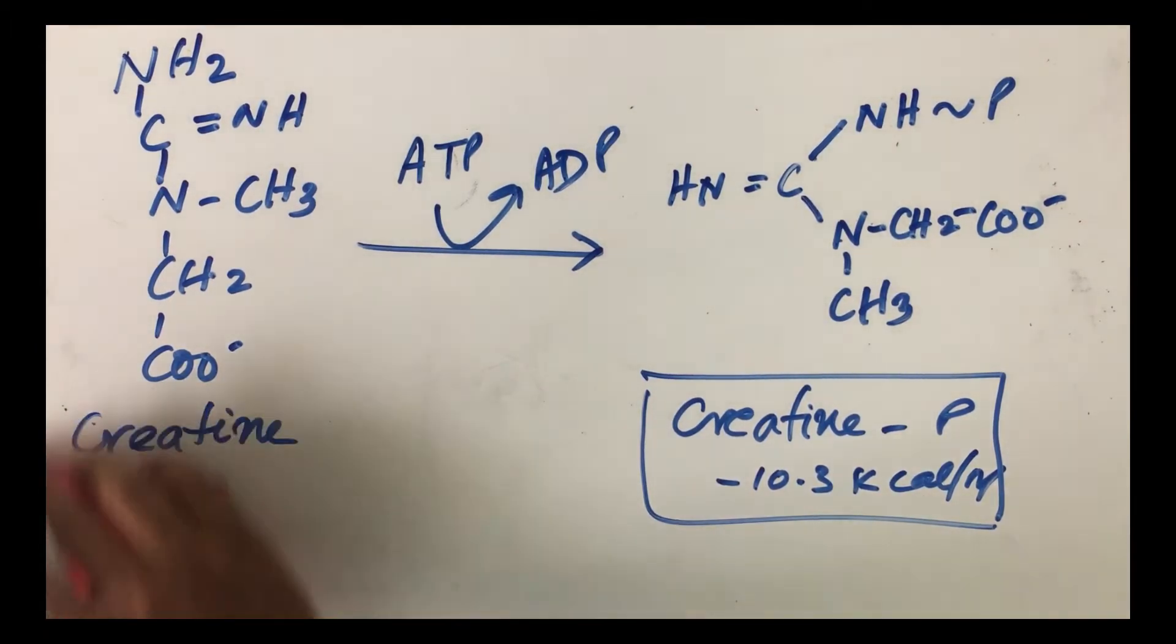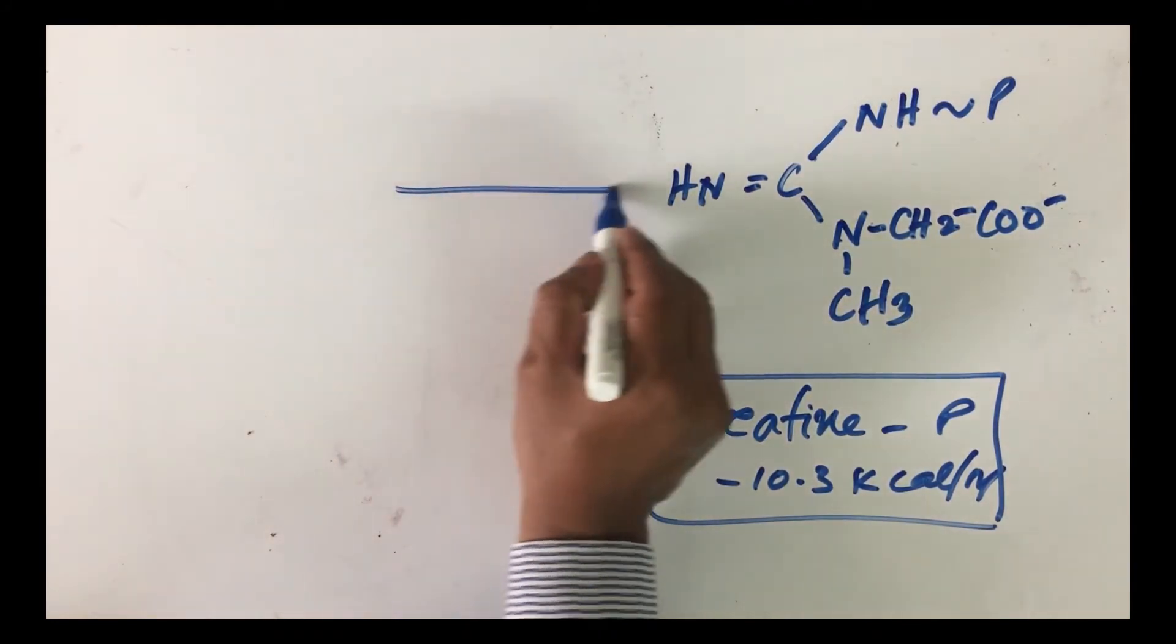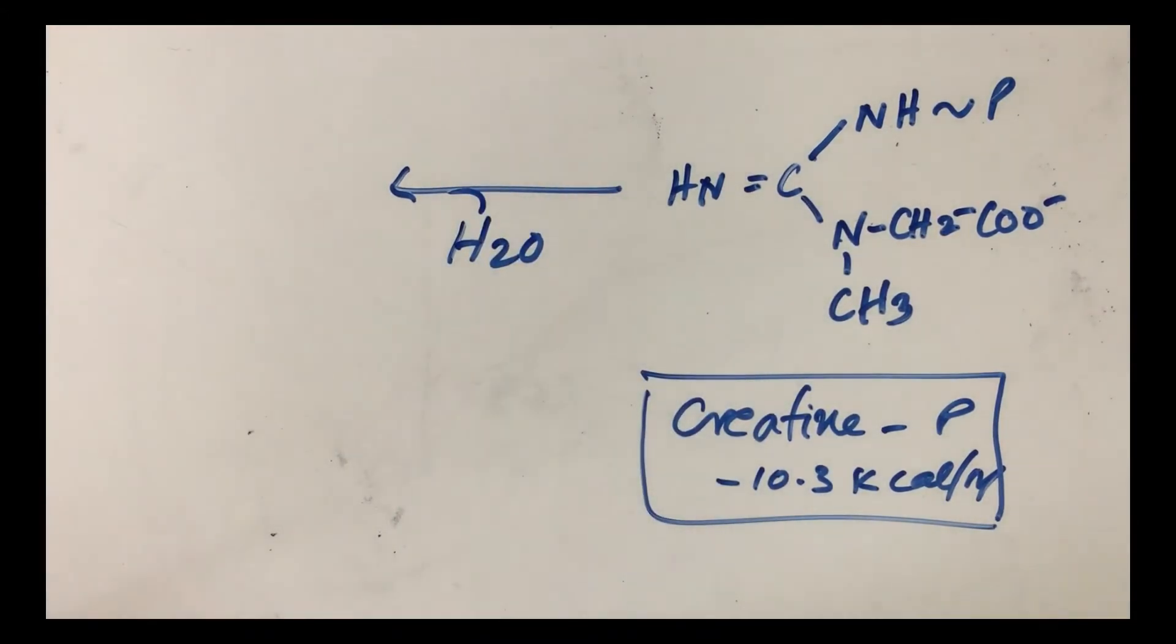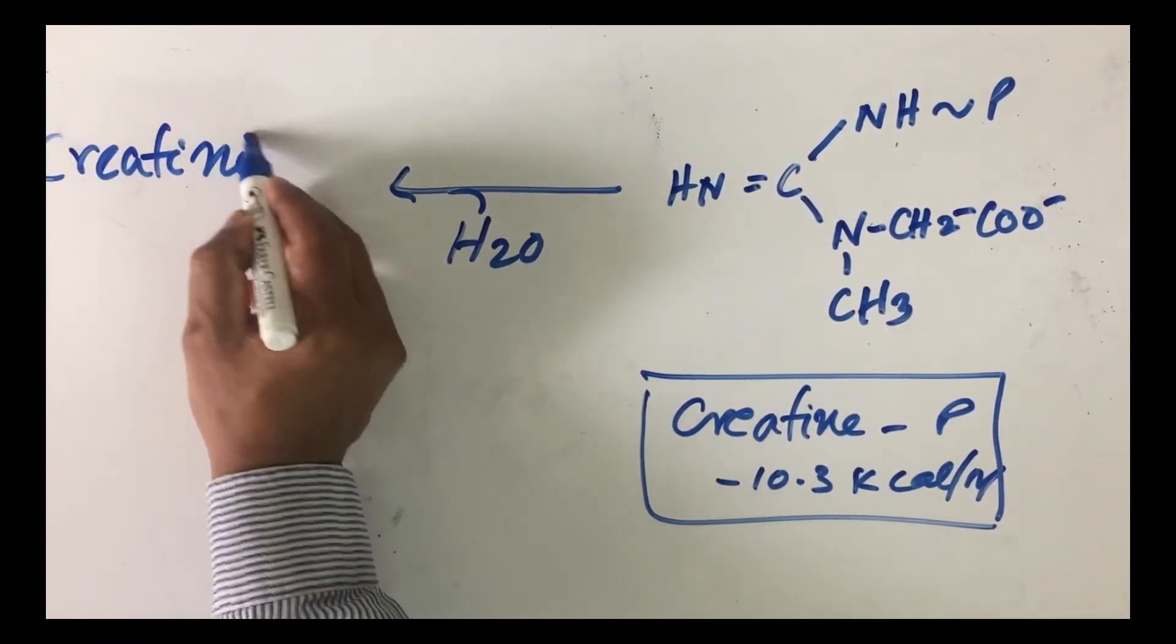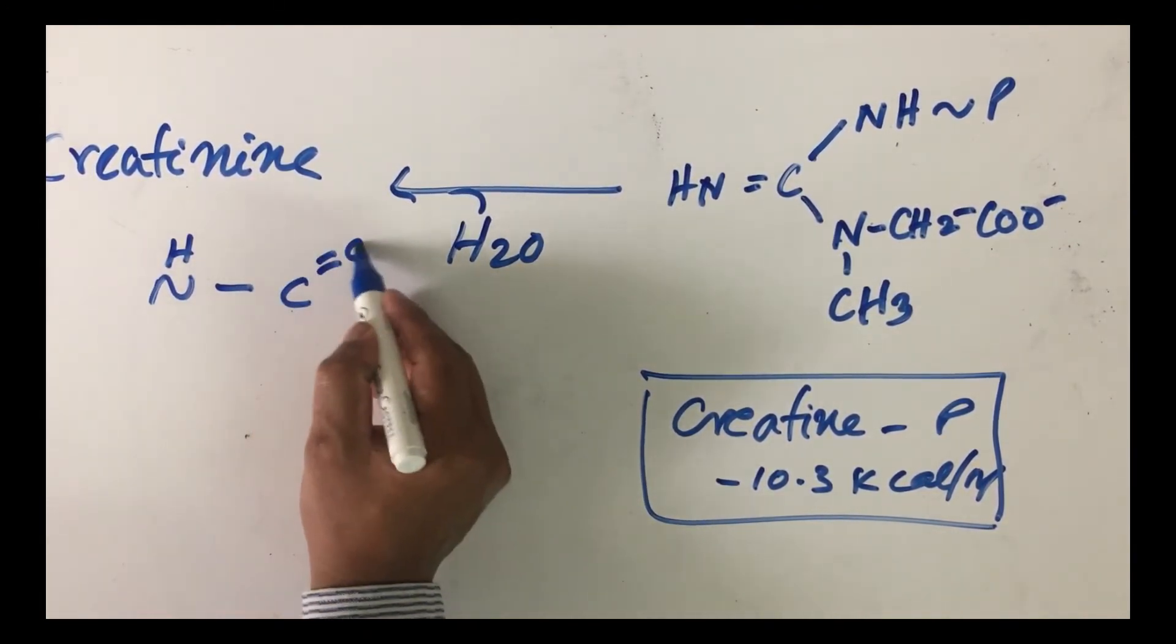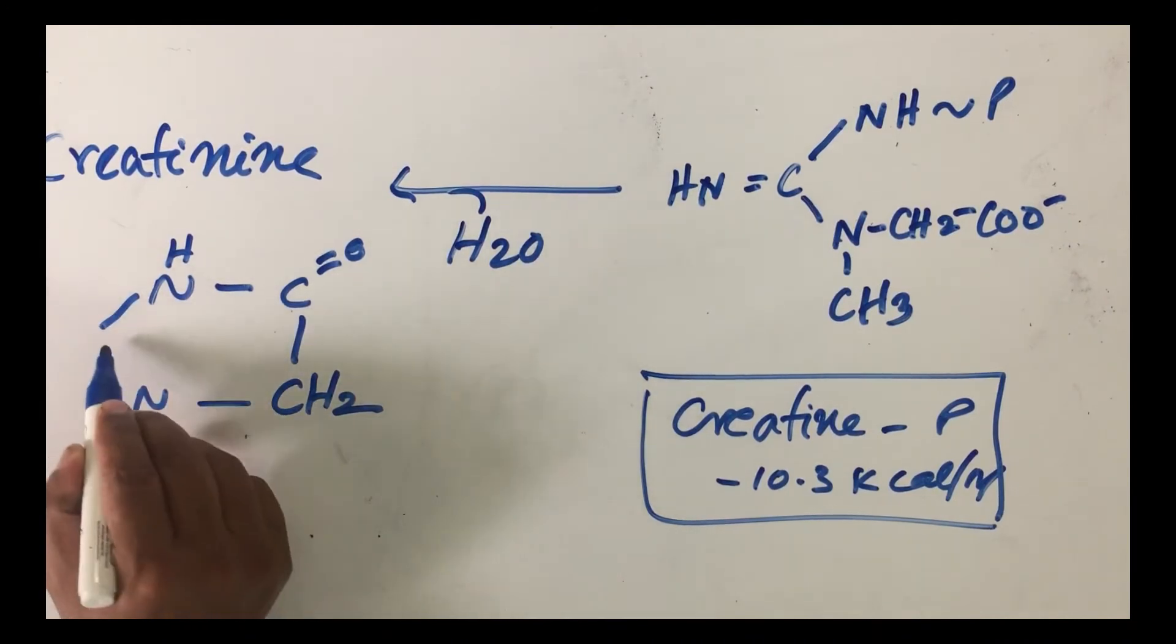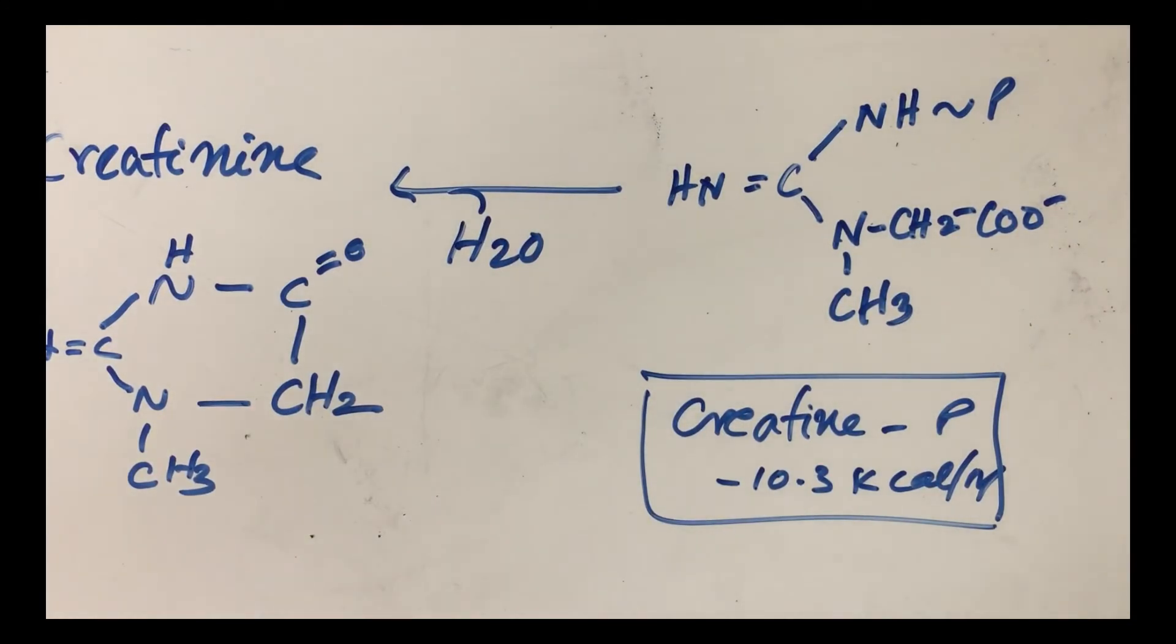Creatine phosphate, after the energy is released in muscle, once the energy is gone, it can undergo dehydration. Once it undergoes dehydration, what will happen is it will form a cyclic structure. The cyclic structure is what is known as creatinine. The structure has CH3, C double bond NH. This cyclic structure is formed which is creatinine.